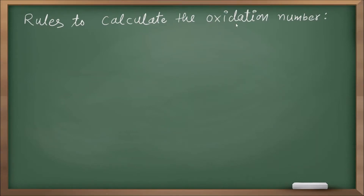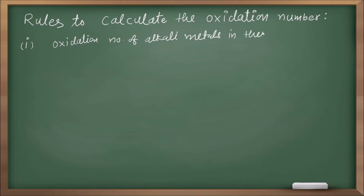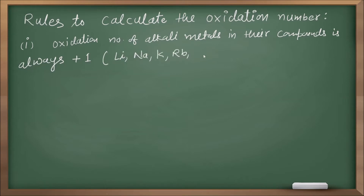Rules to calculate the oxidation number. First rule: the oxidation number of alkali metals in their compounds is always plus one. Alkali metals — lithium, sodium, potassium, rubidium, cesium — their oxidation number is always plus one.